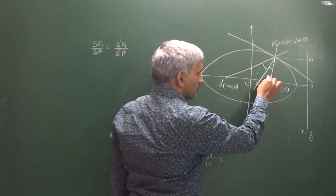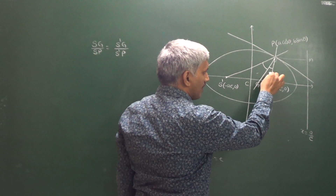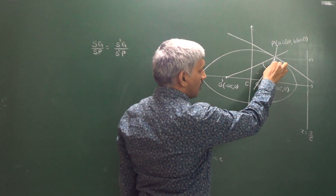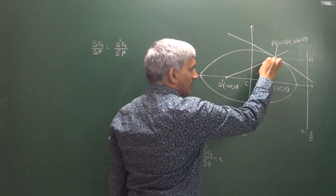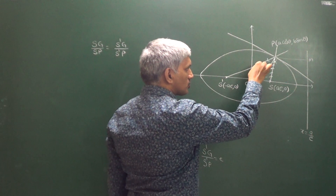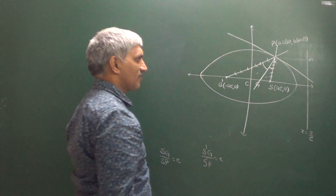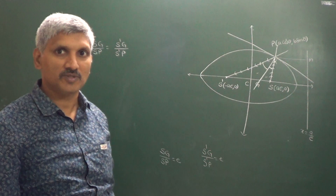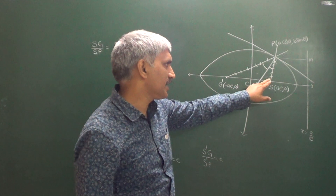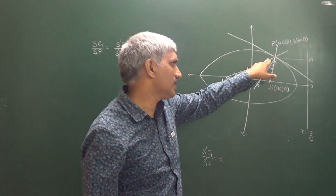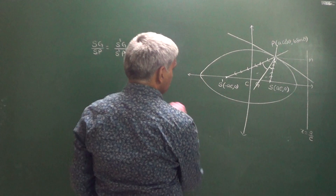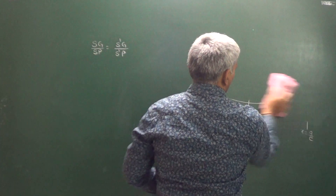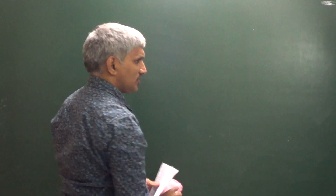So for angle SPS', the tangent is the external angle bisector and the normal is the internal angle bisector. Based on that, a ray of light emanating from one focus gets reflected, and that reflected ray must pass through the other focus — that is the reflection property of an ellipse.